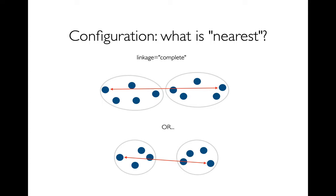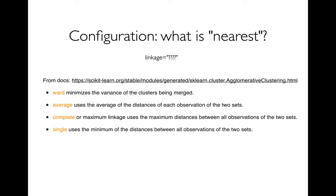I could also do complete linkage, where the distance between two clusters is defined by the two points that are farthest apart. There are other versions too — for example, I could say the distance is measured by what the variance would be if I merged them. What I'm going to use in the programming example is the average: I take every combination of points between the two clusters — if there are three in one and five in the other, that's 15 combinations — compute each distance, and then take the average.